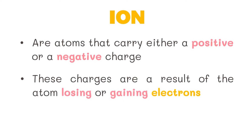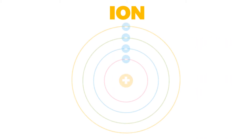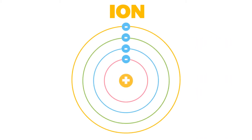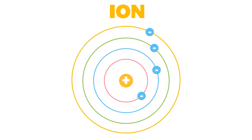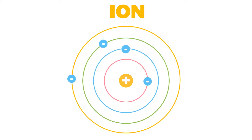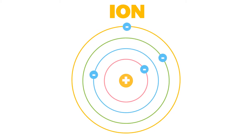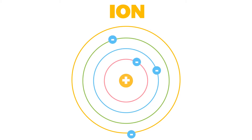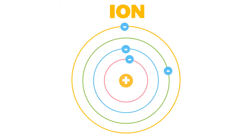But how do atoms lose or gain electrons? We know that in an atom, electrons orbit around a nucleus. The valence electrons are the electrons found in the outermost shell of an atom. These are the electrons that are lost or gained in the process of forming ions.